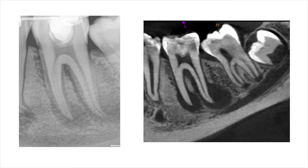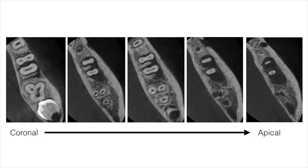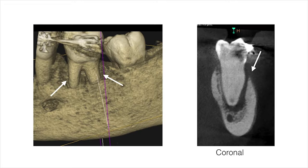A sagittal view of the CBCT scan demonstrated two large periapical radiolucencies around the mesial and distal roots, with the distal area extending right up into the furcation. Different slices through the axial plane emphasized the extent of the periapical pathology. A 3D reconstructed view and a coronal view also clearly illustrated the loss of the buccal bone plate, exposing the coronal two-thirds of the mesial and distal roots.